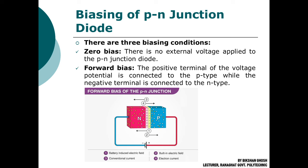Biasing is the application of a DC voltage across the P-N junction. There are basically three types of bias. First is zero bias — when there is no voltage applied across the junction. Next is forward bias — when the positive terminal of the battery is connected to the P-region and the negative terminal is connected to the N-region.